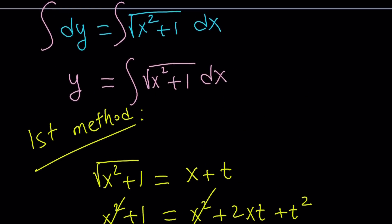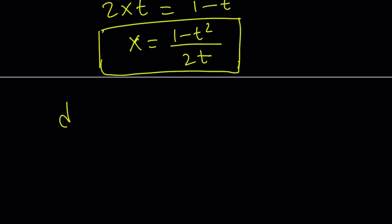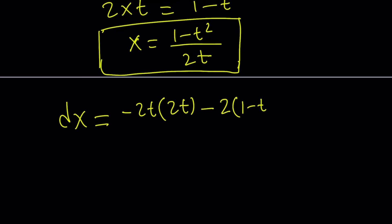We do need dx, so let's go ahead and find out what dx is. dx is the derivative of x times dt. It's the quotient rule: the derivative of the numerator, -2t, multiplied by the denominator, minus the derivative of the denominator, which is 2, multiplied by the numerator. All of that is divided by the denominator squared — that's the quotient rule. Don't forget to multiply by dt.